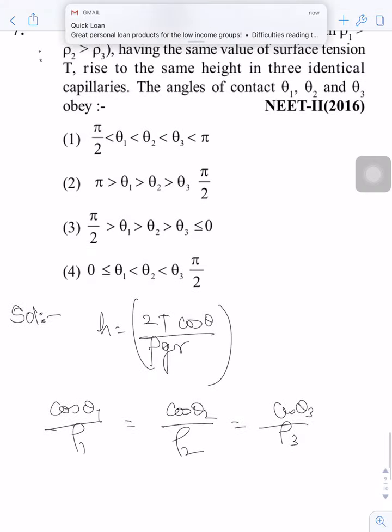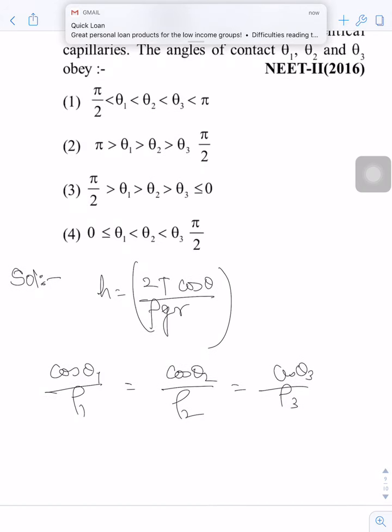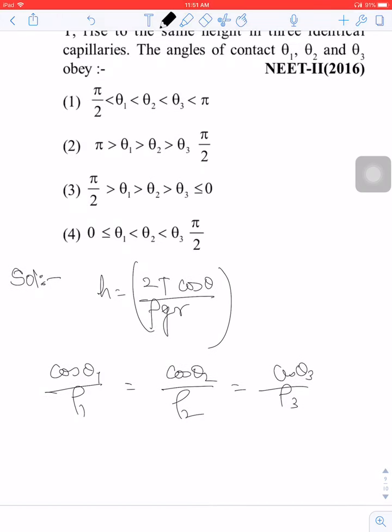We have the relation Rho 1 greater than Rho 2 greater than Rho 3. From this relationship, we can relate theta 1, theta 2 and theta 3 and write the relation.